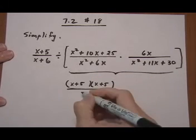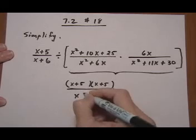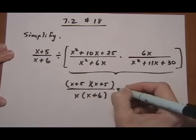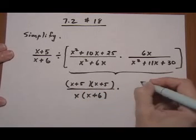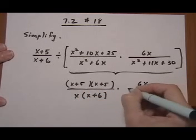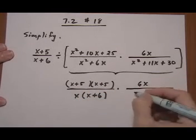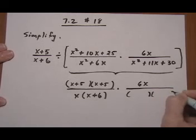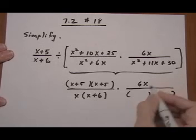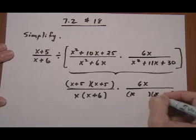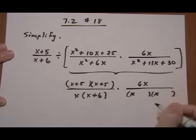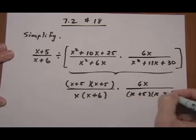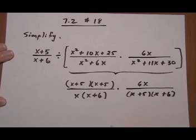On the bottom left we get x times x plus 6, times 6x over trinomials factoring. We're going to do a binomial — x and x, factors of 30 to add to 11 would be 5 and 6, same sign.